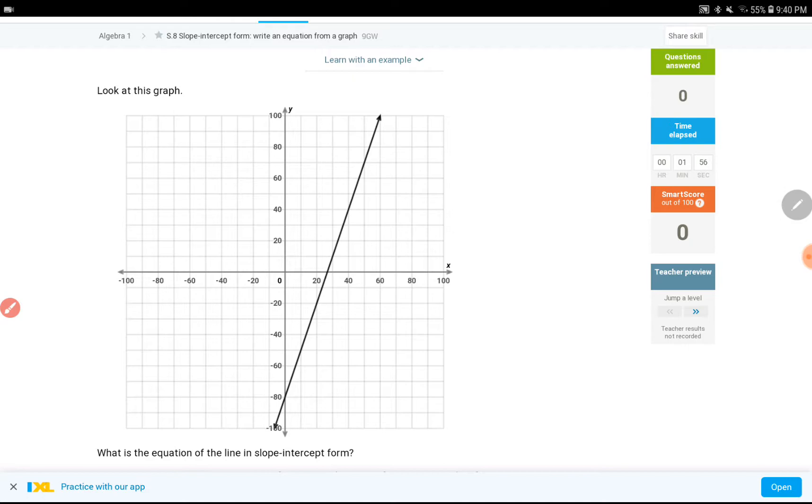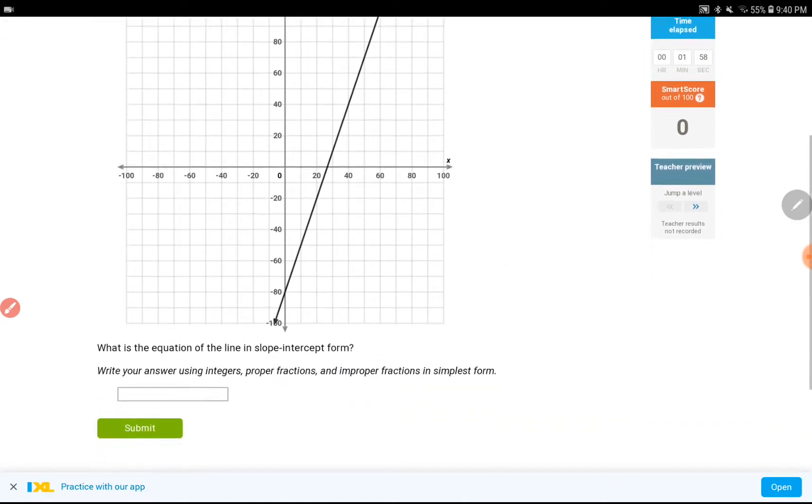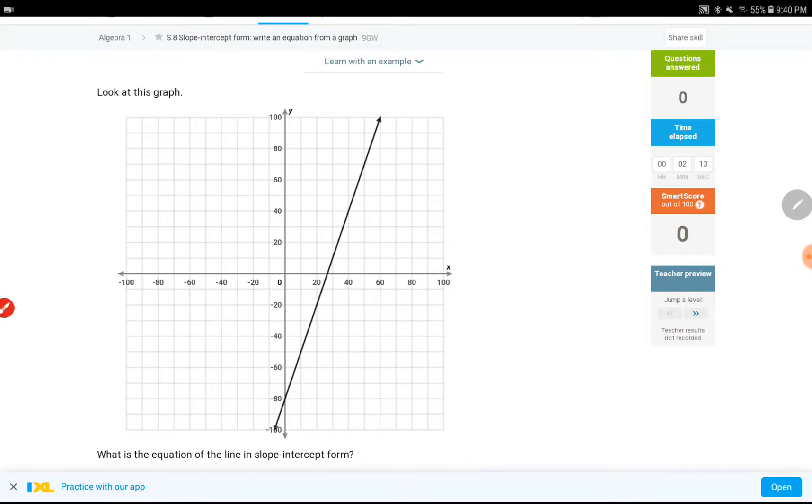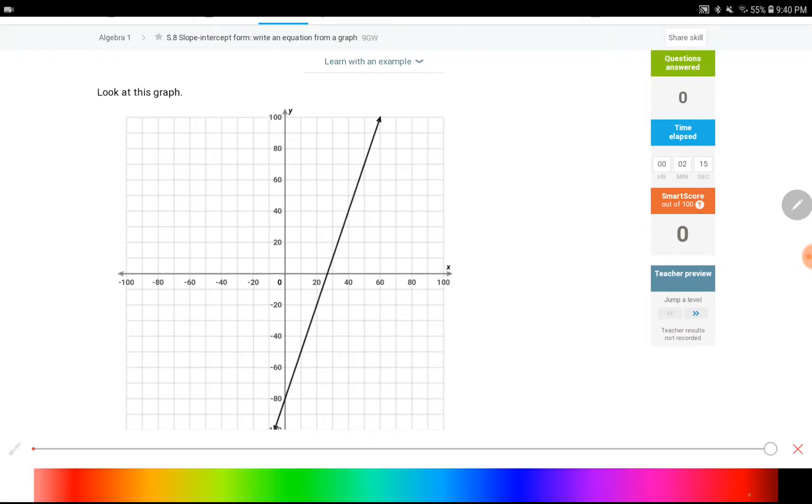So we are going to find the slope of the given equation, find the y-intercept, and then, based on those two numbers, we are going to type our equation in the box provided over here. The assignment we are working on is on IXL S8, it's about writing slope-intercept form given a graph.